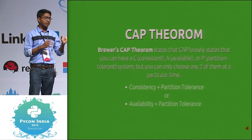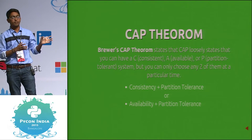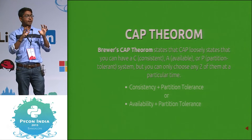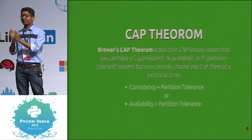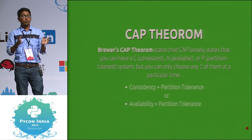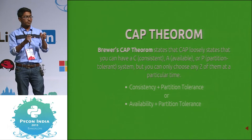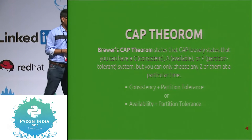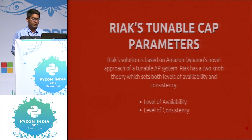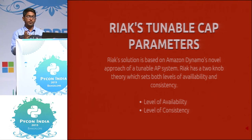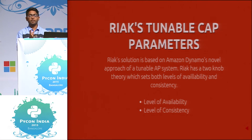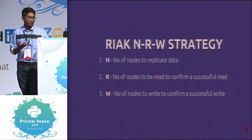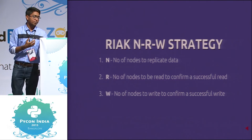So how can you overcome that? Riak has a very good feature which enables you to set the level of consistency and availability. They're not opposites — you can set the levels of both consistency and availability using Riak. Riak has a strategy called NRW.